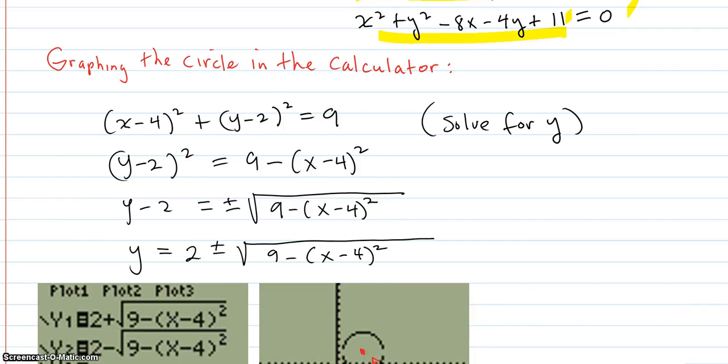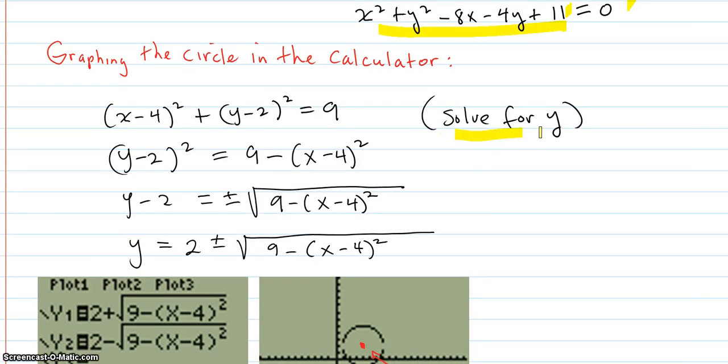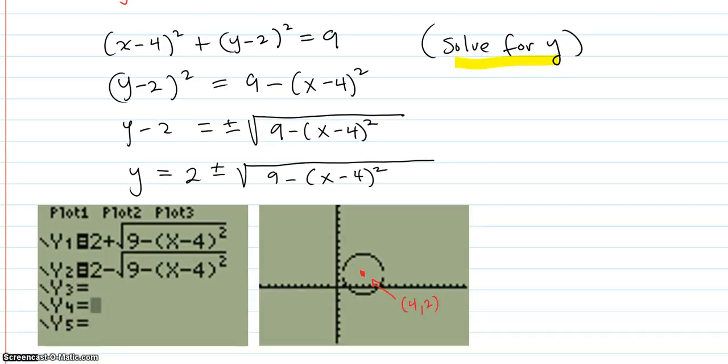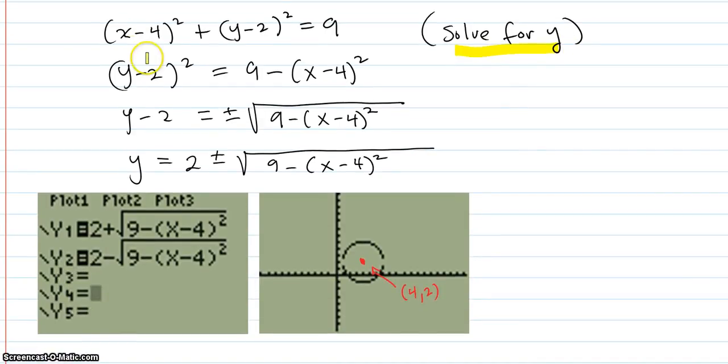So graphing the circle, you have to solve for y because that's what the calculator accepts. So you have to start with the general. You have to subtract (x minus 4) squared from both sides. So now you're here.